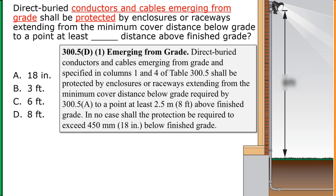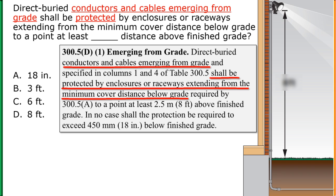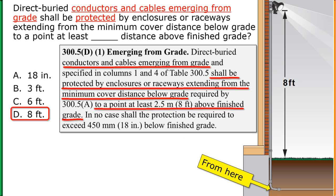When we go to 300.5D1, it tells us that direct buried conductors or cables emerging from grade need that protection by enclosures or raceways extending from the minimum cover distance below grade, which is here, up to at least eight feet above finished grade.